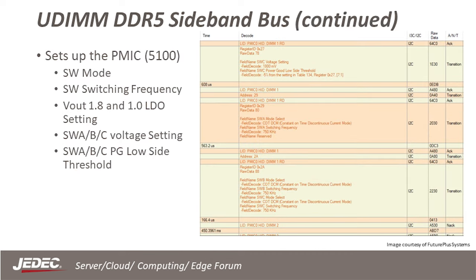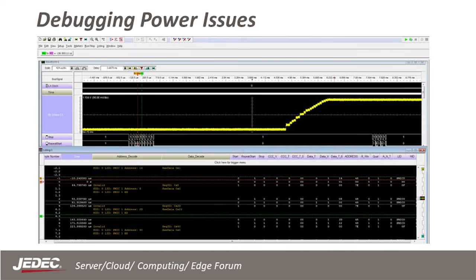Here in the same listing, we see the PMIC being programmed with the frequency and voltage settings. We can also use the logic analyzer to help us debug power issues. Here are some screenshots from our lab showing how we check and validate the power. We can look at the state listing to see if the PMIC was programmed, and then look at the voltage to see if it comes up on the UDIMM after the PMIC was programmed correctly.